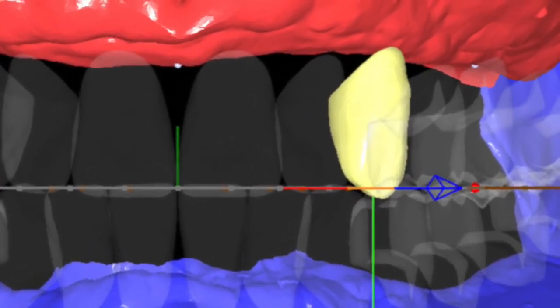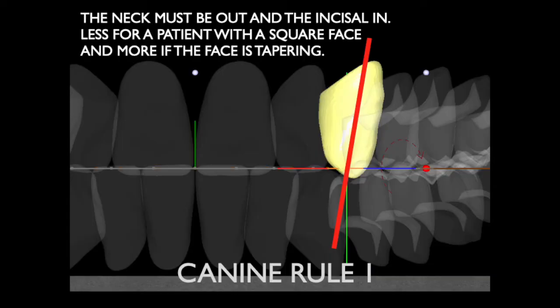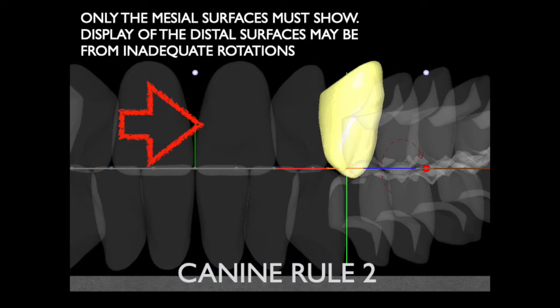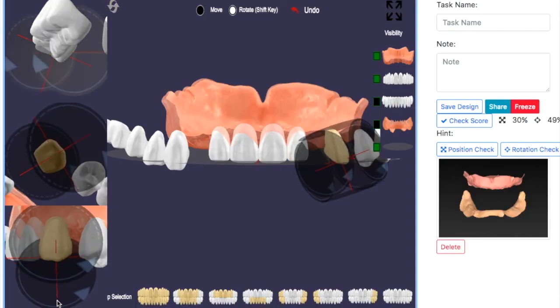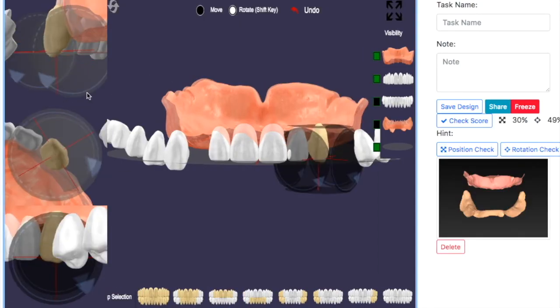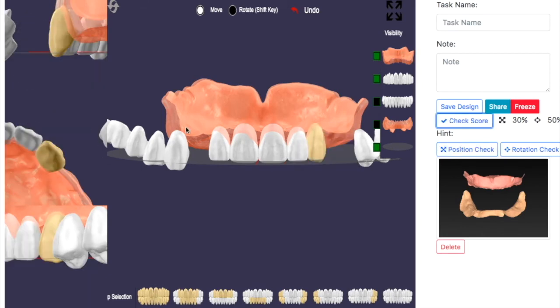Canine also has its own specification. Rule number 1 — frontal view: the neck has to be out and the incisor of the canine should be inward. Rule number 2: only half of the facial surface should be shown from the frontal view. Rule number 3: the vertical of the canine from the sagittal view should be perpendicular to the occlusal plane. Keep rule number 3 for the canine setup, then arrange it accordingly.